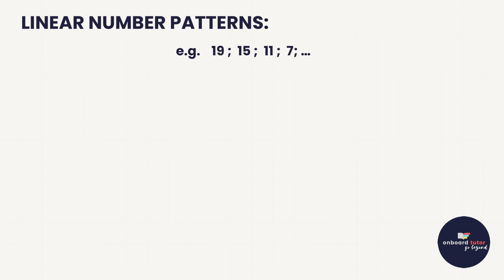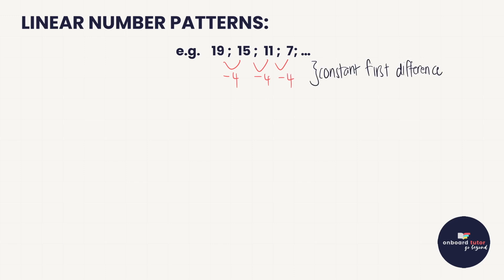Up until now, we have encountered linear number patterns. If we look at this number pattern here — 19, 15, 11, and 7 — we can see that subtracting 4 from each term takes us to the next: 19 minus 4 is 15, minus 4 is 11, minus 4 is 7. This is known as a constant first difference, and when number patterns have a constant first difference, they are known as linear number patterns.